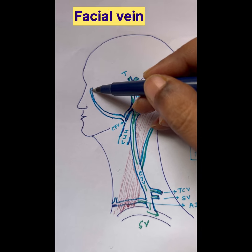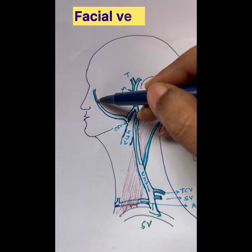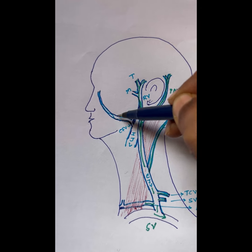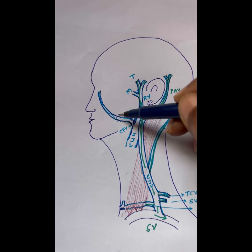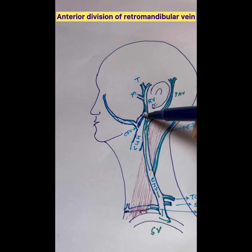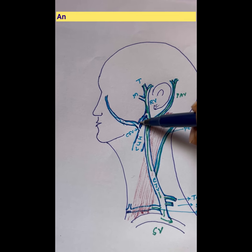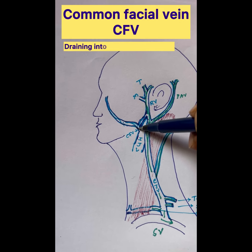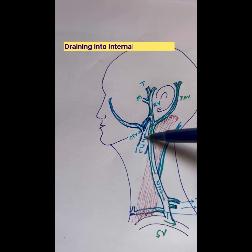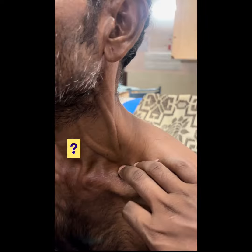The facial vein and the anterior division of the retromandibular vein join together to form the common facial vein, which normally drains into the internal jugular vein. So what is the other vein we are seeing? Let us study the common facial vein.